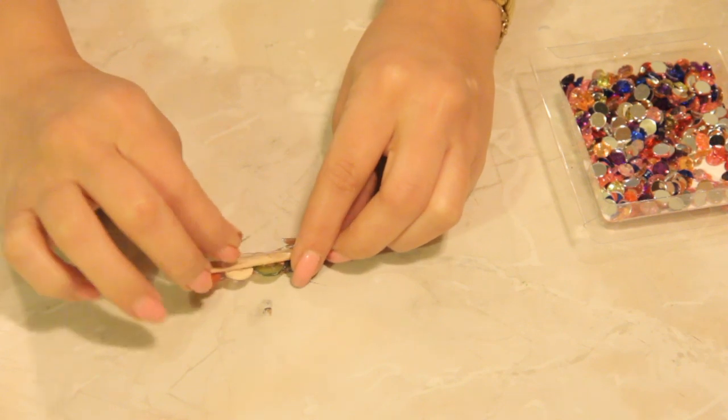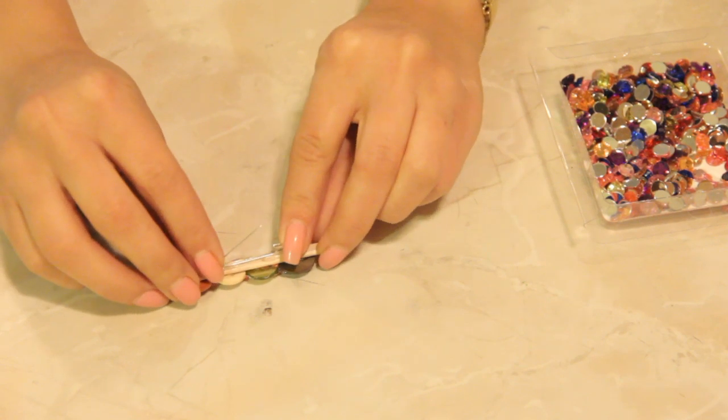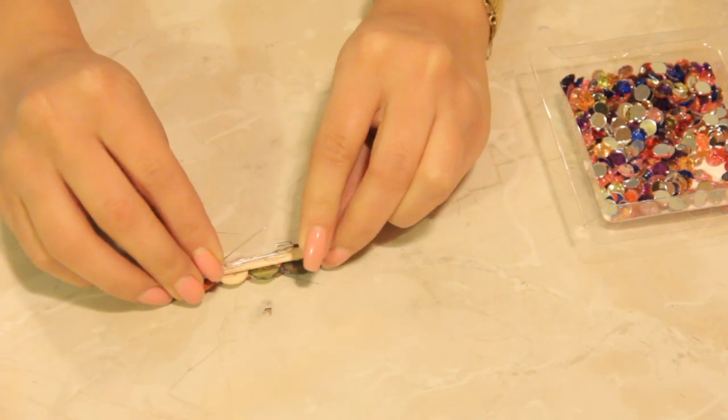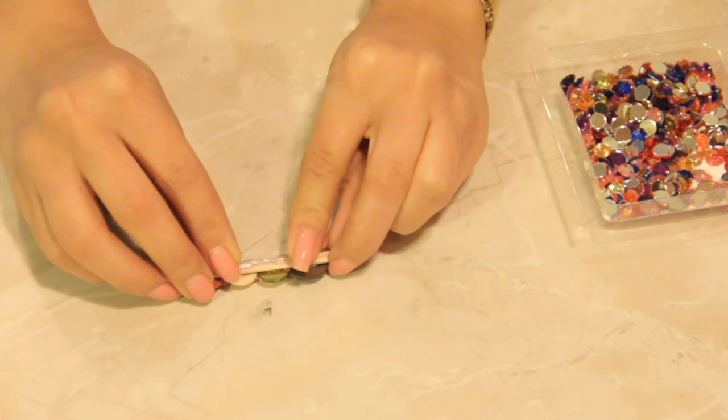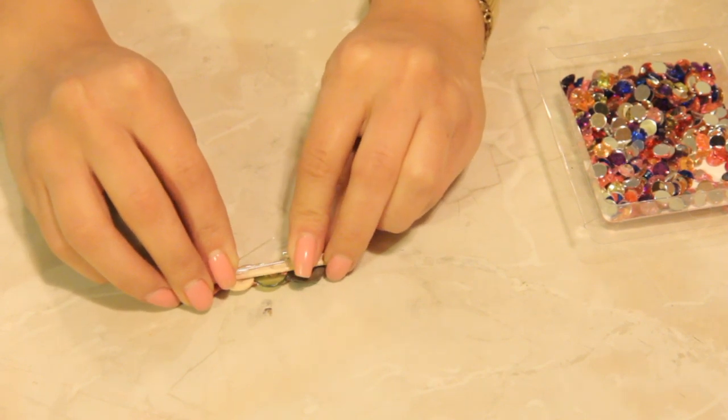Now if you let the hot glue cool just a little bit and then you stick your safety pin onto it, press it firmly onto the back of your brooch. And that is how to craft brooch pins.